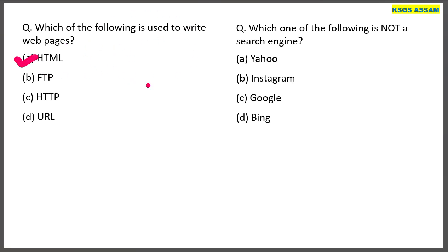Which one of the following is not a search engine? Google, Yahoo, and Bing are search engines. Instagram is not a search engine — it is a social media platform.